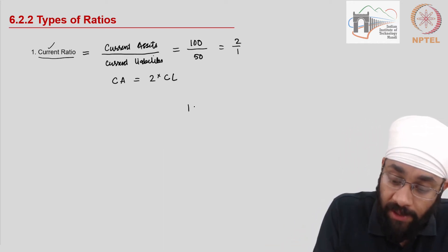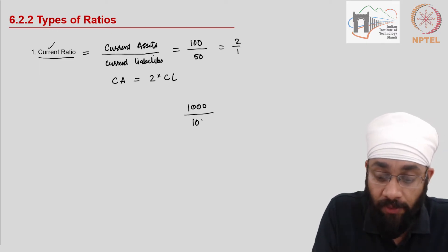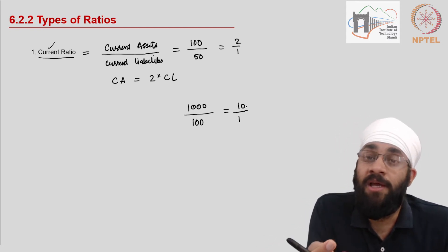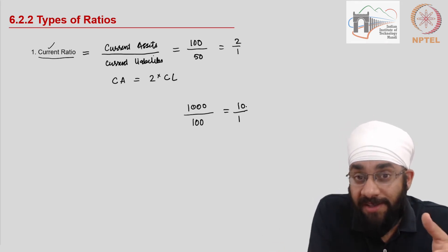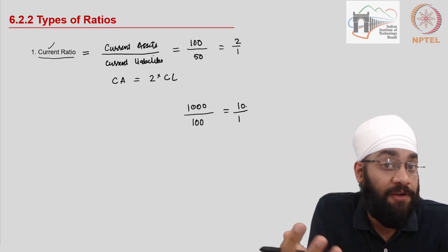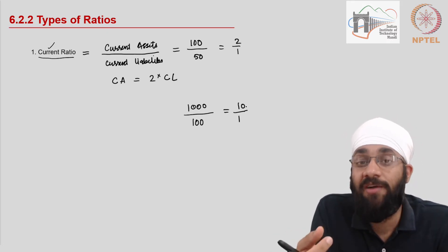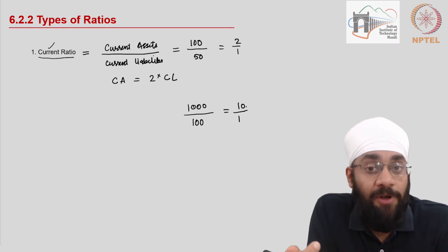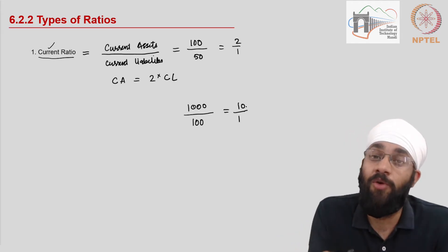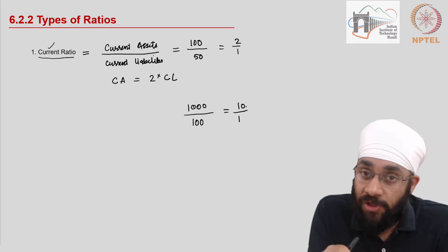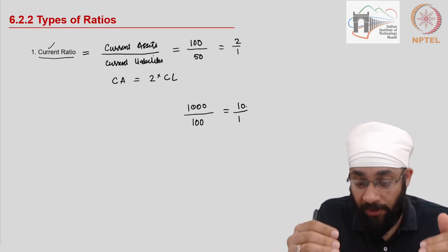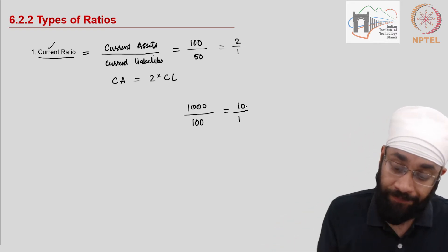However, if you have too high a ratio — say current assets of 1,000 against current liabilities of only 100, giving a 10:1 ratio — that means too many current assets and too few current liabilities. Current liabilities essentially mean you have creditors, meaning your supplier is giving you a credit period. Too few current liabilities means you're not getting good terms from your supplier. So a very high ratio may not always be good either. You need to look at industry standards and compare with competitors.